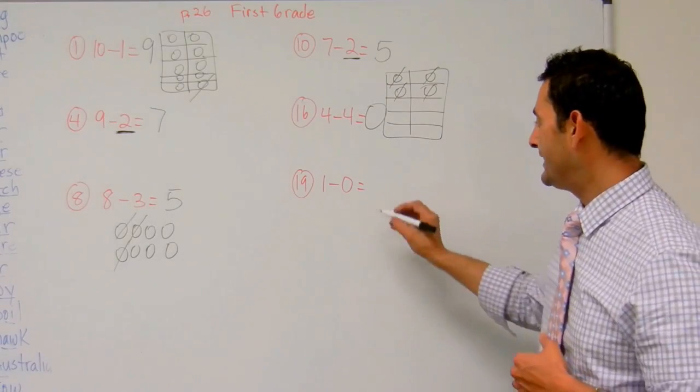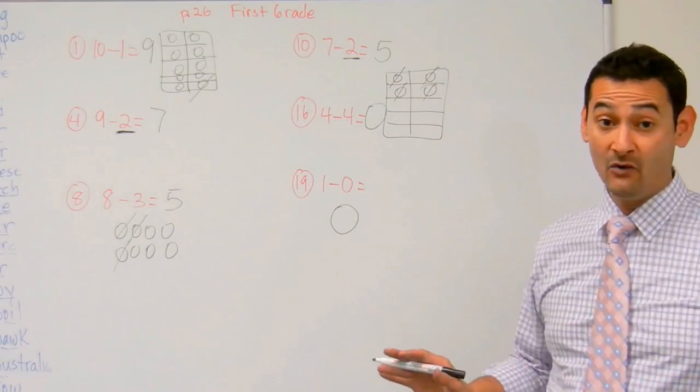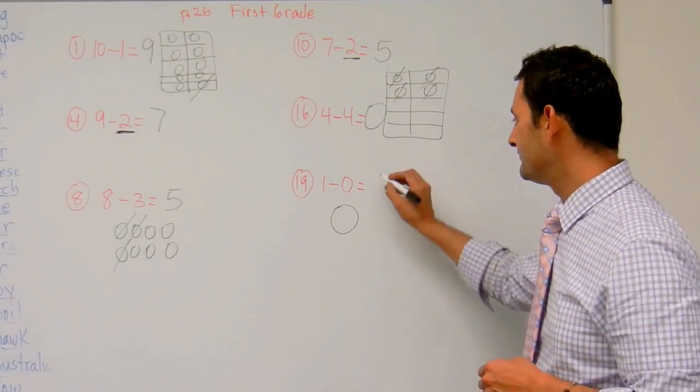And now I have 1 minus 0. I'm going to draw a picture. I have 1. I'm going to take away... I'm not taking away anything. So 1 take away 0 is 1.